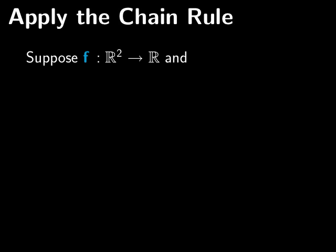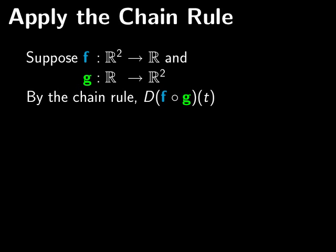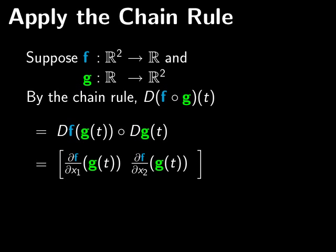So again, f is a function from R^2 to R, and g is a function from R to R^2. If we're going to use the chain rule, we're going to evaluate the derivative of the composition at a point t in R. And by the chain rule, we just get that this is the derivative of f evaluated at g of t, composed with the derivative of g at t. But let's write this all out in terms of matrices just to get a real concrete sense of what's going on.